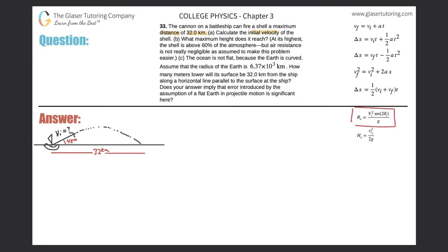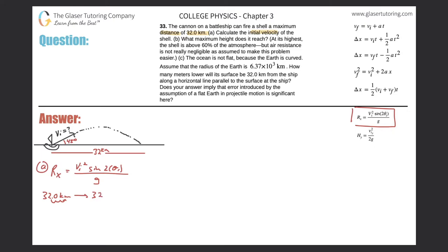We can use the range formula. For part A, the range X equals the initial velocity squared times the sine of two times the initial angle theta, all divided by G. The range was 32 kilometers. Before continuing, let's convert 32 kilometers to meters since G will be in meters per second — so that's 32,000 meters.